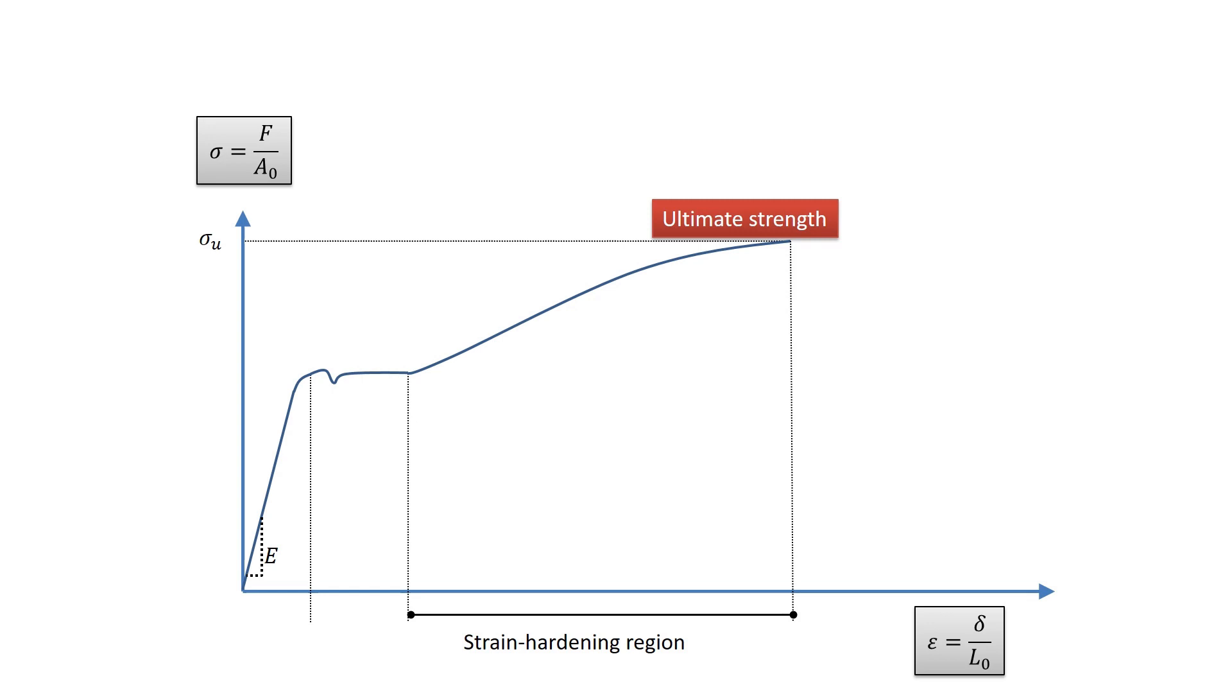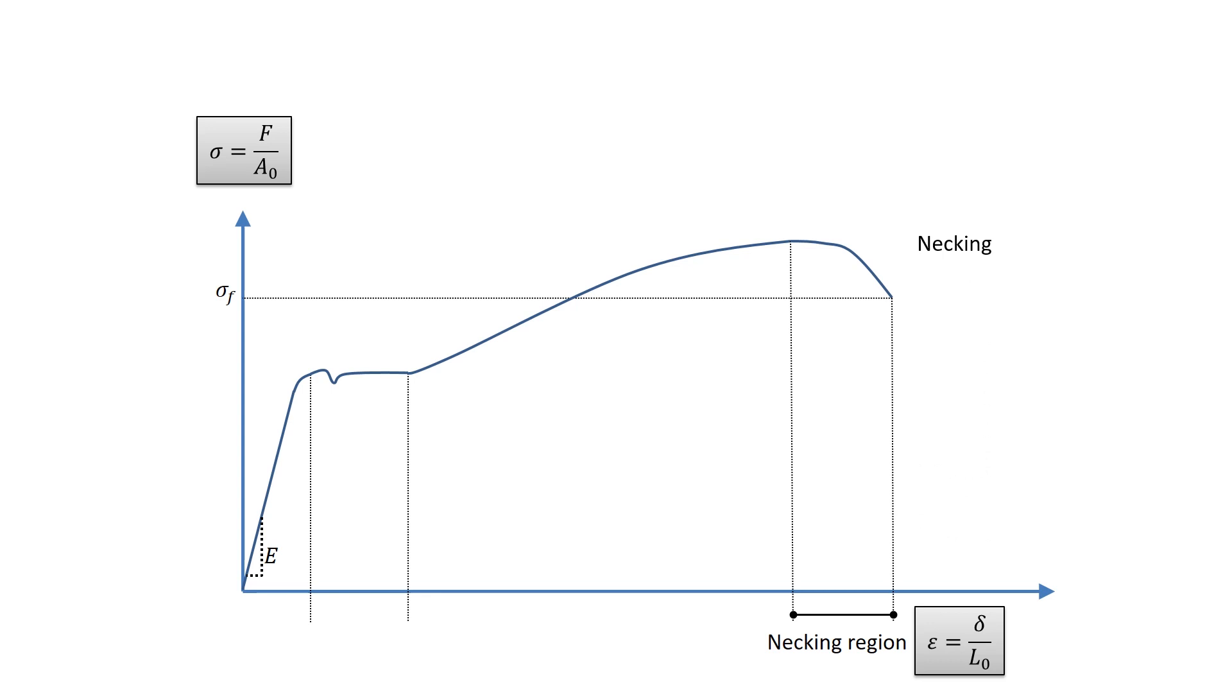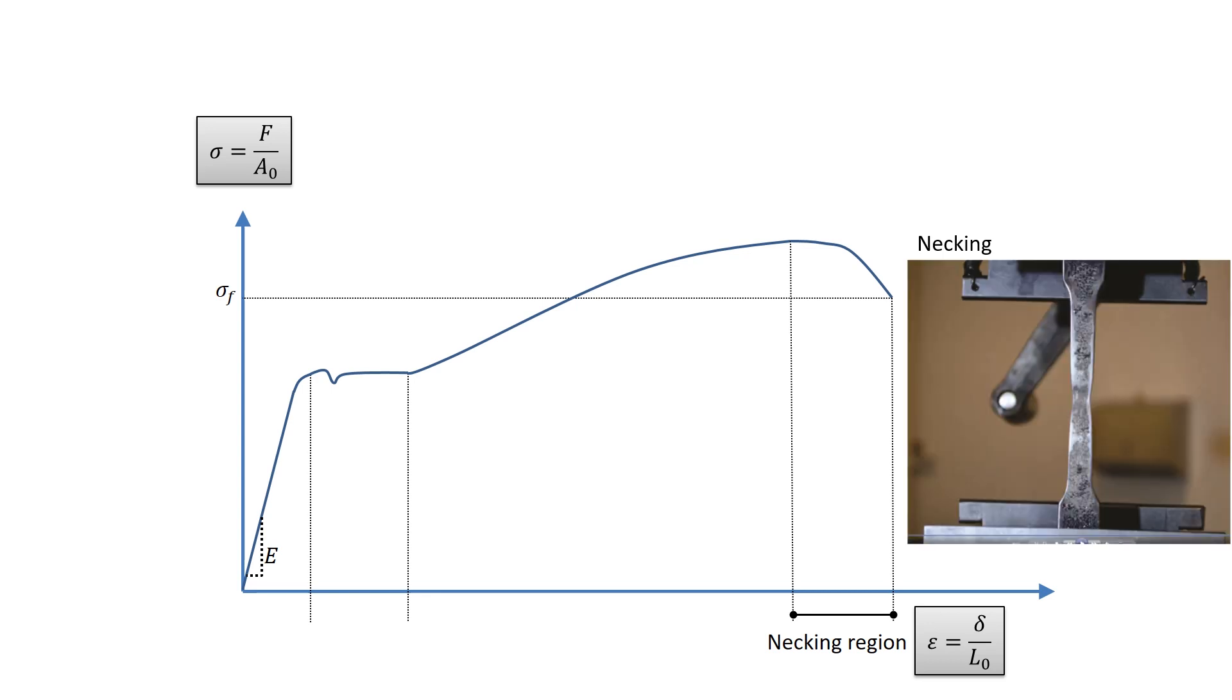Up to the ultimate stress, as the specimen elongates, its cross-sectional area will decrease. The decrease is fairly uniform over the entire specimen's gauge length. Just after ultimate stress, the cross-sectional area will begin to decrease in a localized region of the specimen.